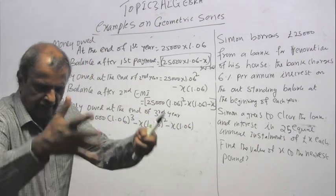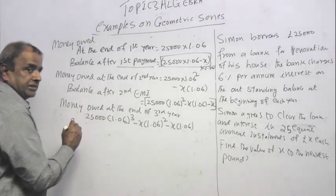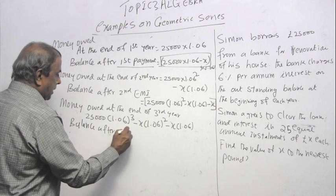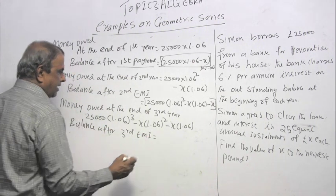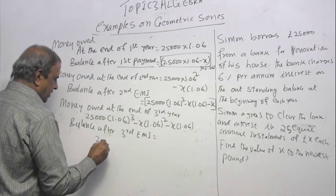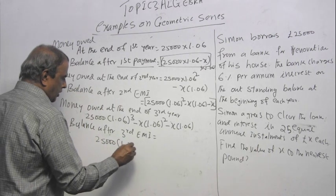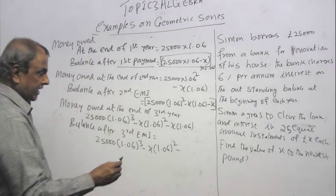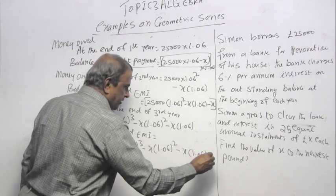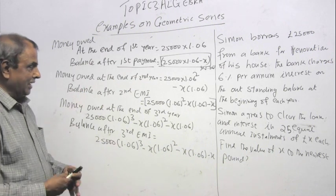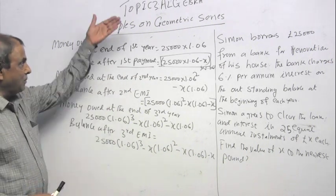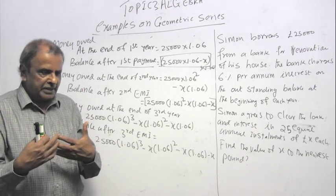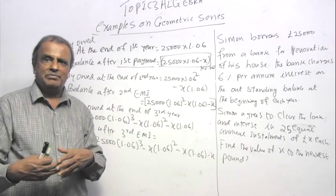Money owed at the end of third year will be 25,000 times 1.06 cubed minus X times 1.06 squared minus X times 1.06. Then you pay one more X. Balance after third payment or third EMI would be 25,000 times 1.06 power 3 minus X times 1.06 power 2 minus X times 1.06 minus X. It would be stupid of us as math students if we keep writing this for 25 years. As a math student, you are expected to recognize pattern and arrive at a general term.